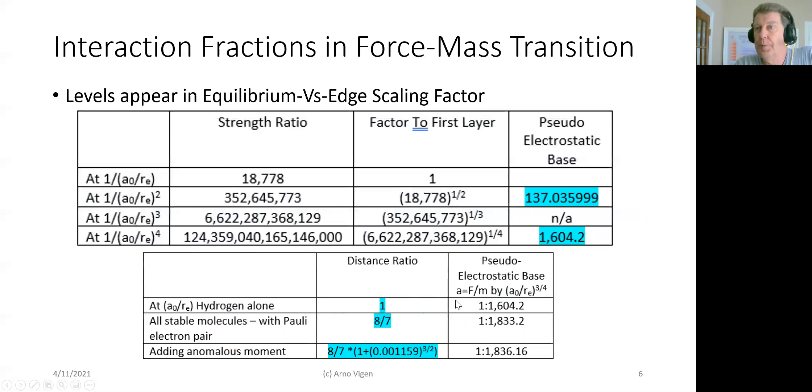And that one quarter, this A over E to the one quarter is 16,778. And that's what applies for hydrogen. If you then have unstable molecules, you have the cubed.